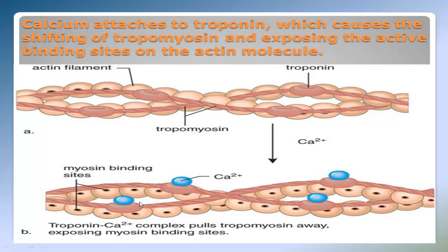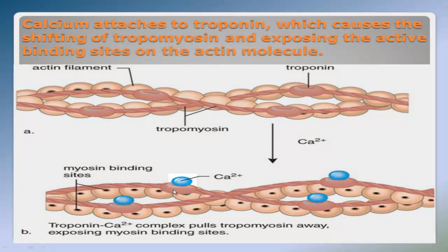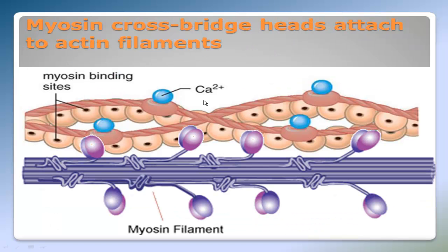In the second picture, once calcium — represented by blue circles — attaches to troponin, it causes a shifting of tropomyosin, the red rope-like structure, and exposes the active binding sites represented by black dots. As you can see in the bottom picture, there are many more active binding sites exposed compared to the top one. Since these active binding sites are exposed on the actin molecule, the myosin globular heads or cross bridges can now attach to the actin filament.